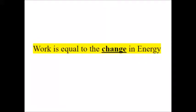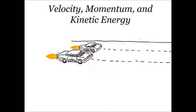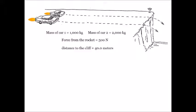Work is equal to the change in energy. We're talking about velocity, momentum, and kinetic energy for these two rocket cars. We have rocket engines putting forces on these two cars: a smaller car of 1,000 kilograms, a more massive car twice as massive, a 500-newton constant force from each rocket engine, and they have 40 meters to go before they fall off a cliff.